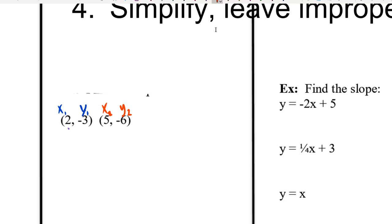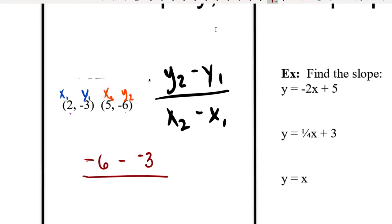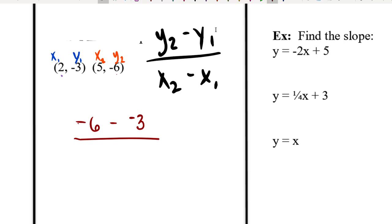So then, in my formula where I have y sub 2 minus y sub 1 over x sub 2 minus x sub 1, I just plug in the right thing in the right place. So I could get negative 6 is y sub 2, y sub 1 is negative 3. And then, I do the x's. x sub 2 is 5, x sub 1 is 2.